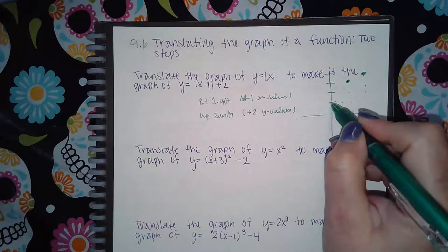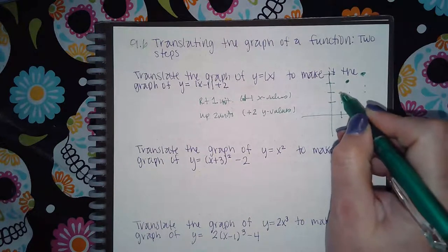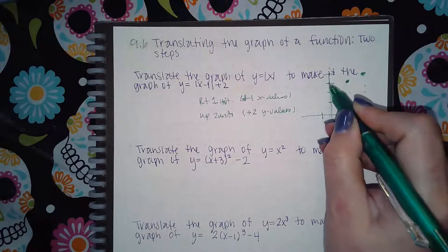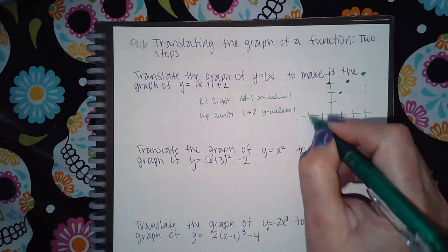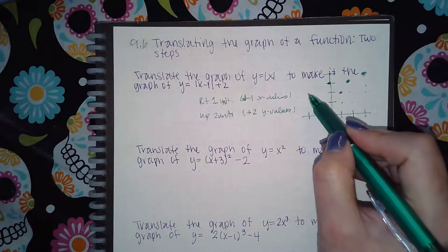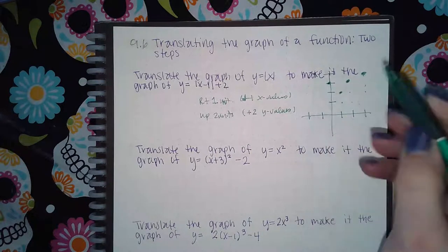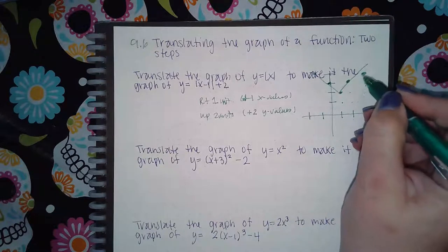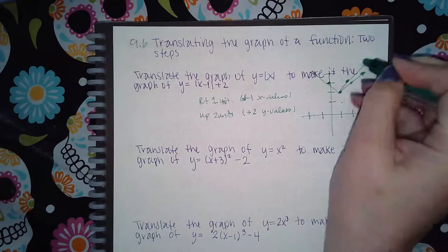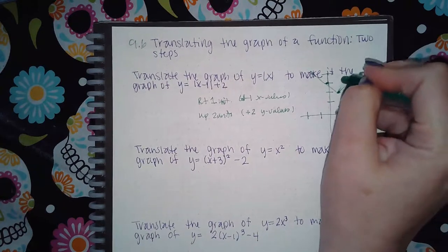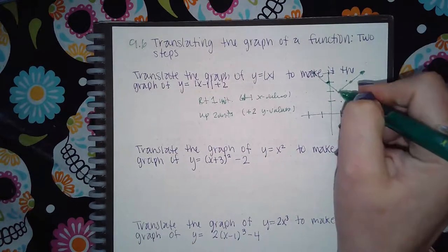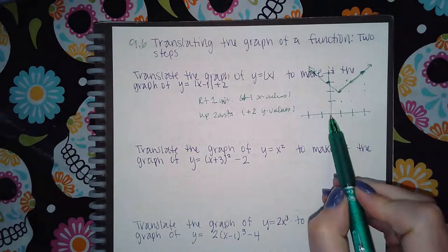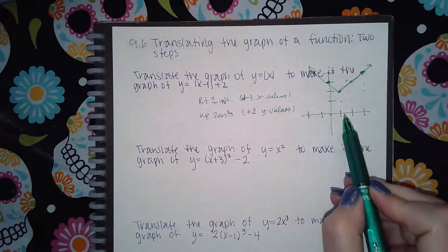Starting from (0, 0): right 1 and up 2. Then right 1 and up 2 again for the next point, and right 1 then up 2 for the next. The V should have this shape — I'm not drawing it too great, but you get the idea. The original V drawn on the graph should now be moved, and that vertex, which was at (0, 0), went to the right 1 and up 2.